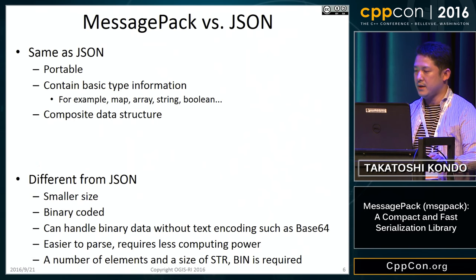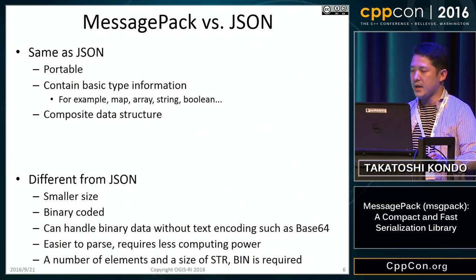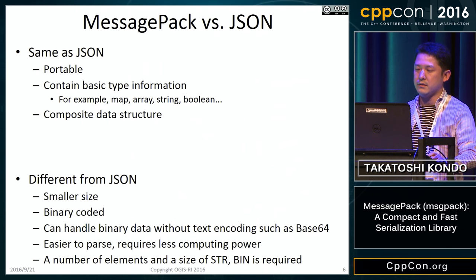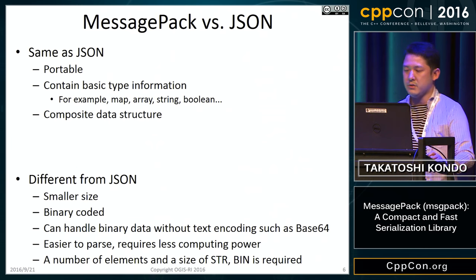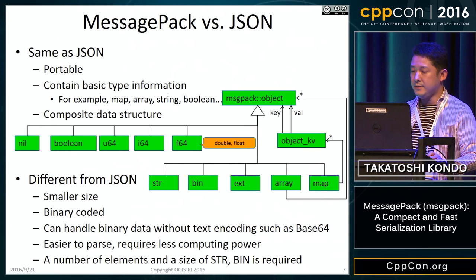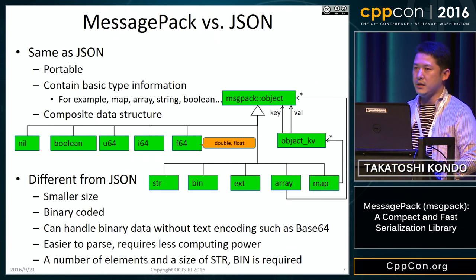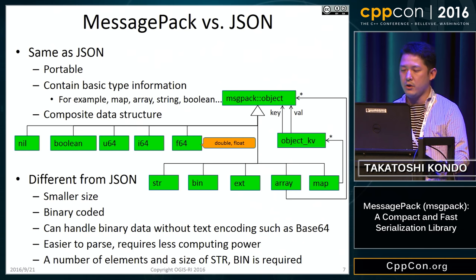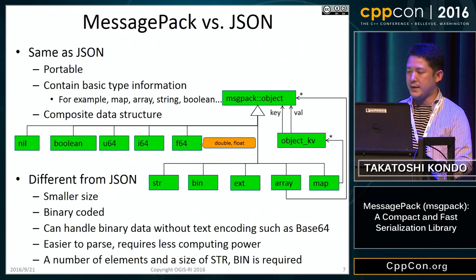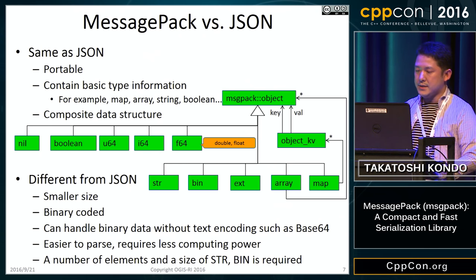Which MessagePack features are the same as JSON? Both are portable, both contain basic type information, schema and code generation isn't required, and they are a composite data structure. The differences: MessagePack is more compact than JSON, it is binary coded so it can handle binary data without text encoding such as base64, and MessagePack is easier to parse, requiring less computing power.